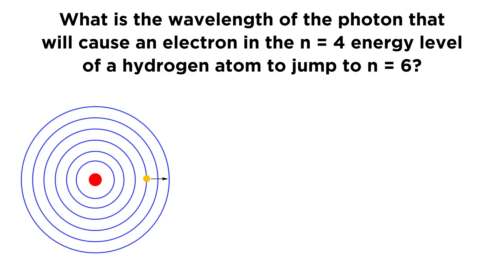The question asks: what is the wavelength of the photon that will cause an electron in the n = 4 energy level of a hydrogen atom to jump to n = 6?